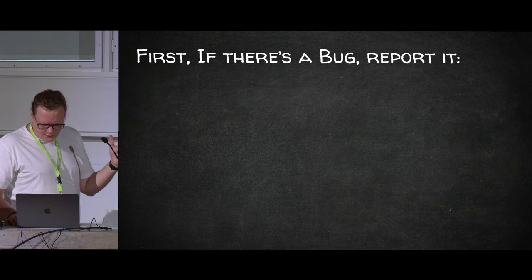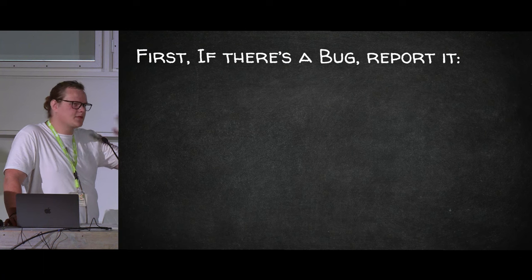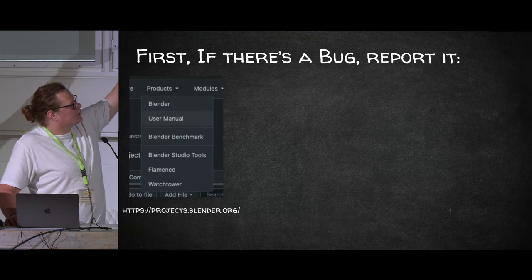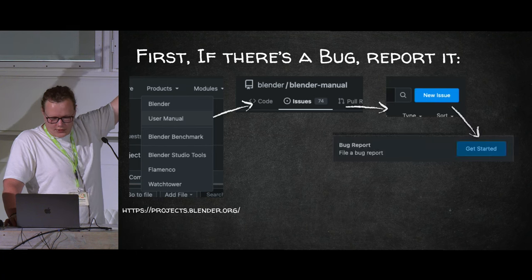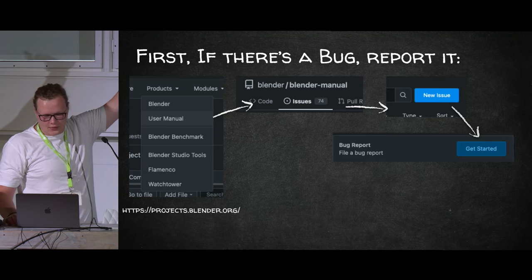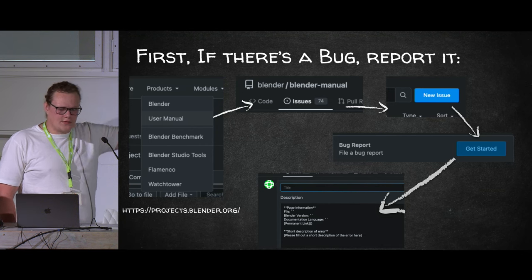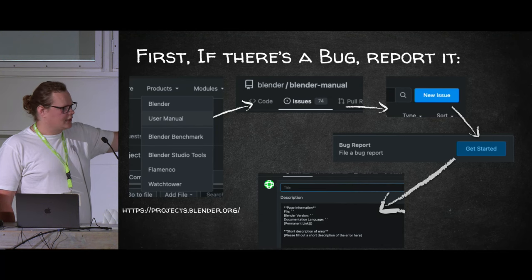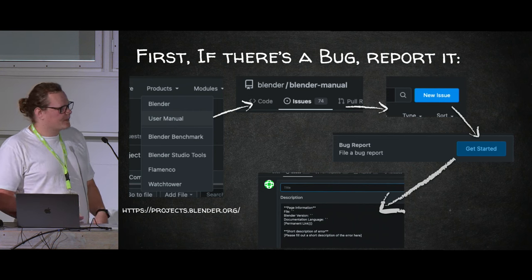The workflow for reporting bugs in the manual is basically the same as for Blender itself. Instead of selecting Blender, you select 'User Manual' from projects.blender.org, go to the Issues tab, click 'Submit a New Issue,' and choose the bug report template. It'll ask for useful information: what file the bug is in, what version of Blender, the language, the documentation link, and a short description. Fill out as much as possible, similar to an actual Blender bug report.